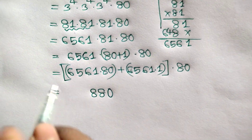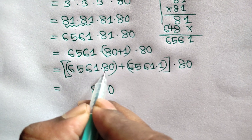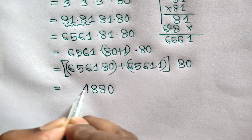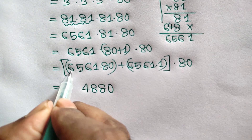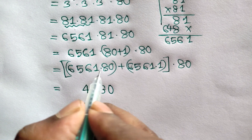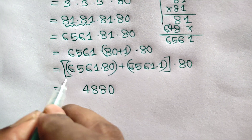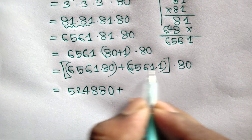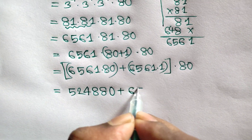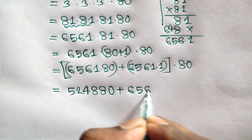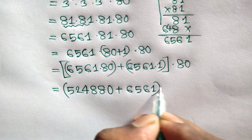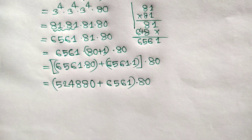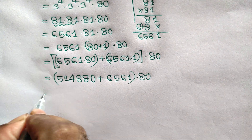4 is carry. Now 5 times 8 is 40, 40 plus 4 is 44, 4 is carry. 6 times 8 is 48, plus 4 is 52, plus 1. So 6561 times 80 is calculated.